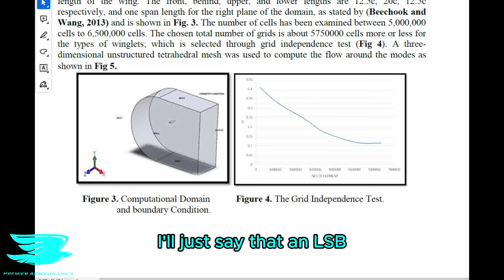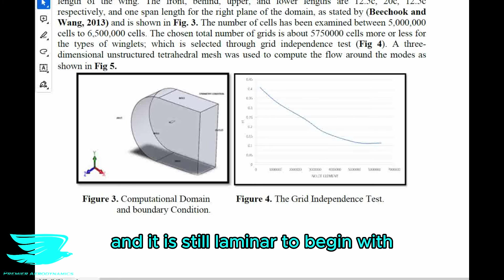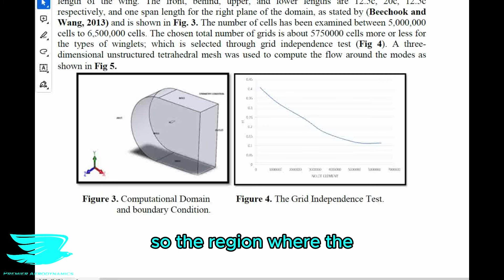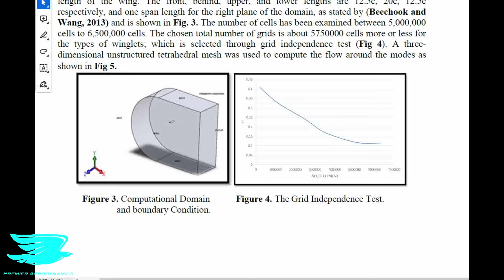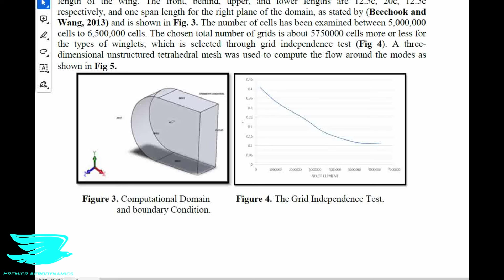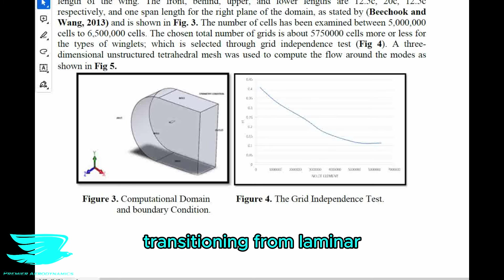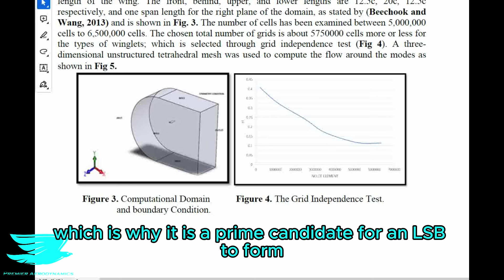In a nutshell, an LSB is where the flow going over a surface is still laminar to begin with, then strangely lifts off the surface, and while it is off the surface it transitions to turbulence and then reattaches soon afterwards. The region where the flow has separated has additional flow just recirculating in this pocket underneath — and this is called the laminar separation bubble. This LSB is a way for the boundary layer to transition to turbulence; it is a gentler way of doing so, which occurs at low turbulence intensity levels.